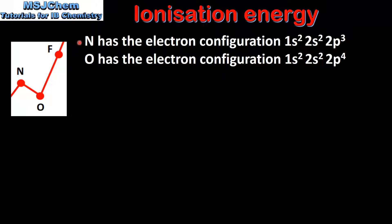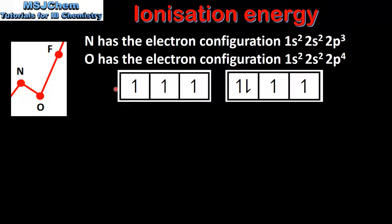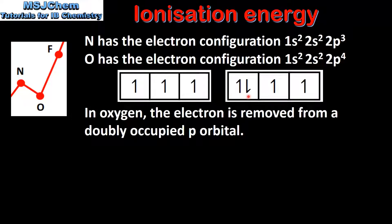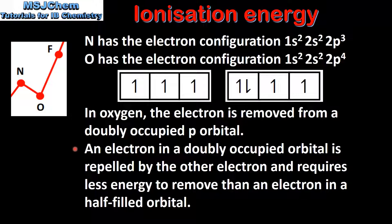Next we look at the reason for the decrease in ionization energy between nitrogen and oxygen. Nitrogen has the electron configuration 1s2, 2s2, 2p3. Oxygen has the electron configuration 1s2, 2s2, 2p4. Here we can see the electron in box diagrams for nitrogen on the left and oxygen on the right. When an electron is removed from an oxygen atom it is removed from a doubly occupied p orbital. An electron in a doubly occupied orbital is repelled by the other electron and requires less energy to remove than an electron in a half-filled orbital.